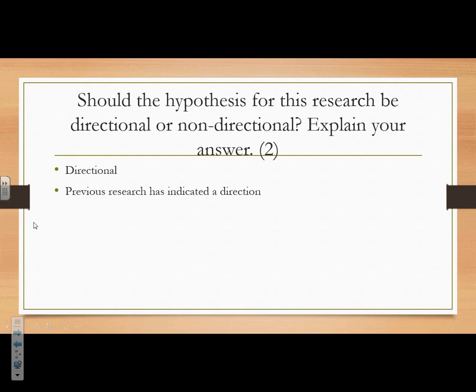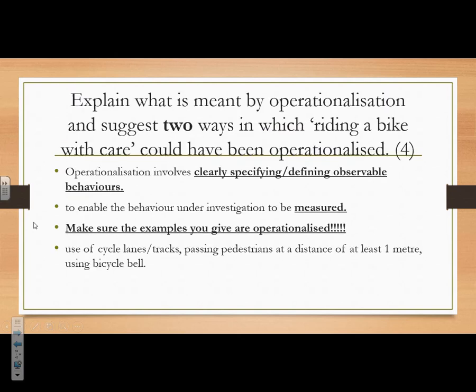The hypothesis should be directional because previous researchers indicate a direction — if we didn't know, we'd use a non-directional hypothesis. What is meant by operationalisation? You get the four marks by clearly specifying or defining something to make it measurable — you must mention both the specifying and the measurability. Make sure examples you give are operationalised. Use of cycle lanes, passing pedestrians, and the distance of one metre using the bicycle bell. If you mention speed, make sure you mention a sensible specific speed.